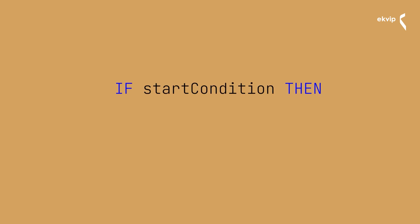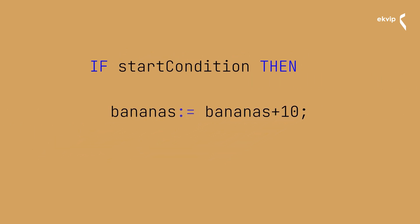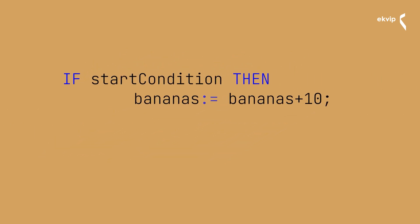An IF instruction is used to execute an instruction depending on a certain condition. The first step is that it tests a certain condition — for example, if the value of a bool variable is true or false. Depending on the result, the instruction will be executed. The syntax looks like this: in the first line you write the condition that should be tested — 'IF start condition THEN' — and in the second line you write the instruction that should be executed if the condition is true.